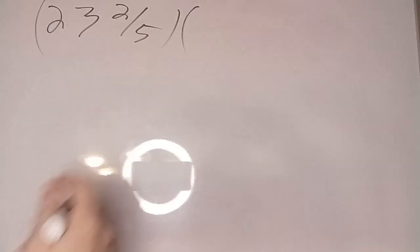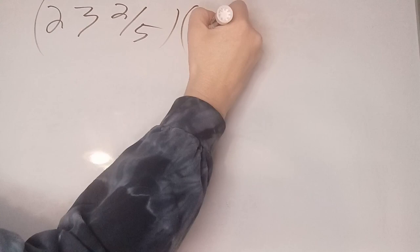All right, let's multiply some mixed numbers and fractions. Let's start out with something like 23 and 2/5 times 3/7.